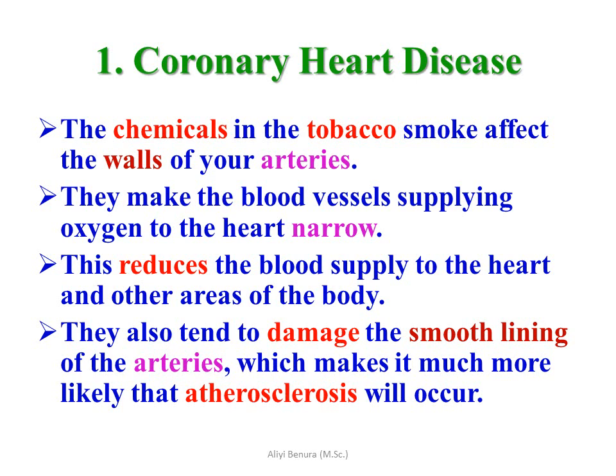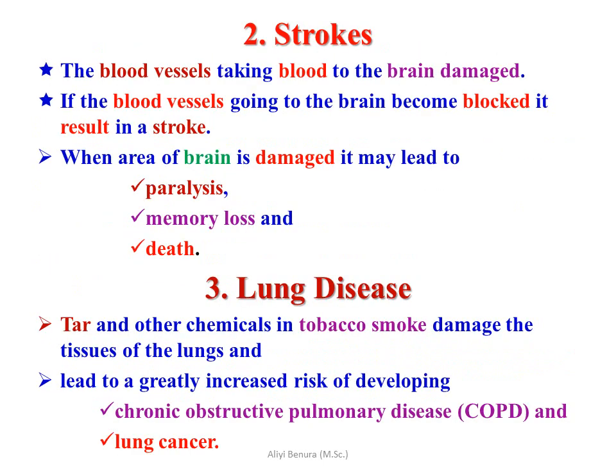Nicotine is a chemical in tobacco that affects all of your arteries. It makes the blood vessels supplying oxygen to the heart narrow, which reduces blood supply to the heart and other areas of the body. It also tends to damage the smooth lining of the arteries, making it more likely that arteriosclerosis will occur. A stroke is when a blood vessel supplying blood to the brain is damaged or blocked, which can result in paralysis, memory loss, and death.